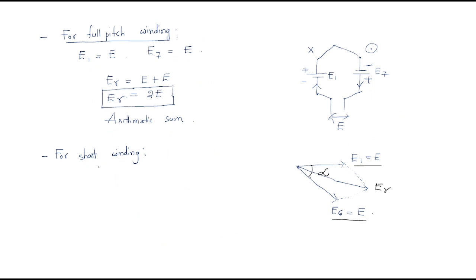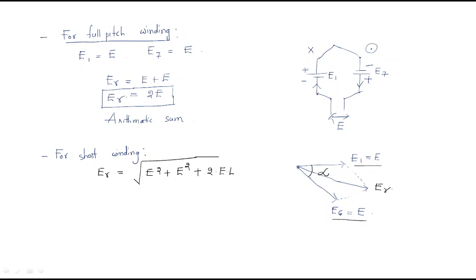The resultant EMF er equals, using the vector sum: er = √(e1² + e6²+ 2·e1·e6·cos α). Since the voltage generated in both slots has the same magnitude e, this becomes √(e² + e² + 2·e·e·cos α), which simplifies to √(2e² + 2e²·cos α).